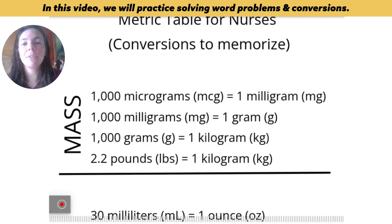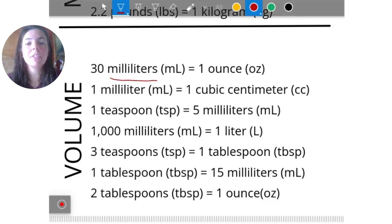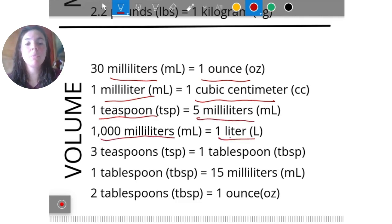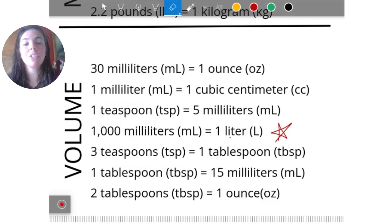We also have conversions for volume — milliliters, ounces, CCs, teaspoons, tablespoons. A lot of these you really have to memorize: 30 milliliters equals one ounce, one milliliter equals one CC, one teaspoon equals five milliliters, 1000 milliliters equals one liter, three teaspoons equals one tablespoon, one tablespoon equals 15 milliliters, and two tablespoons equals one ounce. Feel free to take a screenshot of this slide so that you have it to study.